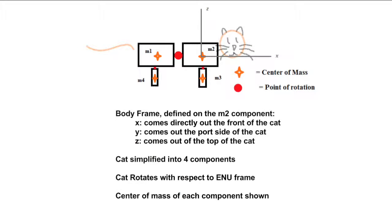While researching this project, we found a very complicated mass model made by students trying to create a robotic cat to simulate this maneuver. For sake of simplicity, we broke it down into four components, just two sections of body and two sections of legs. The body frame is defined with the x-axis coming out the front of the cat, the y-axis coming out of the port side of the cat, and the z-axis coming straight out of the top of the cat.